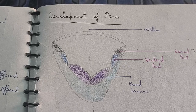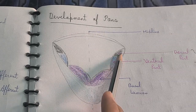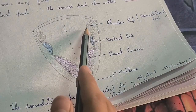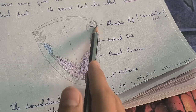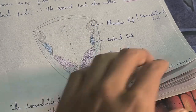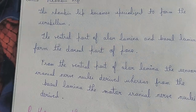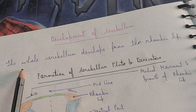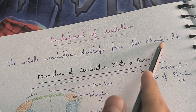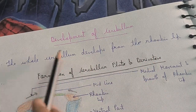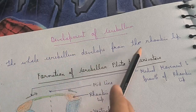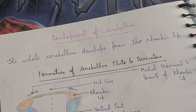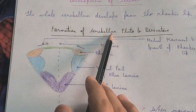During the development of bones, we studied that the dorsolateral part of the alar lamina gets converted to a thickened structure, and that structure is known as the rhombic limb. We also studied that this rhombic limb becomes specialized to form the cerebellum. So the whole cerebellum develops from the rhombic limb. In today's video, we have to understand the development of the cerebellum — basically how this rhombic limb gets converted to form the whole cerebellum. First, let's discuss the formation of the cerebellar plate and its derivatives.